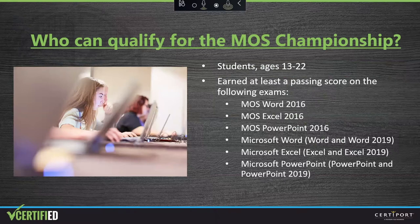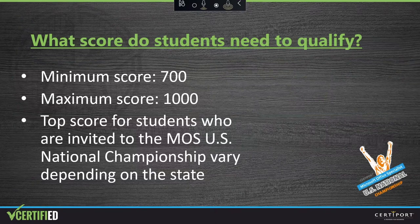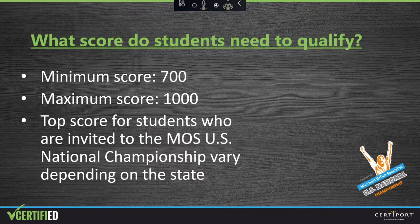The Microsoft Office Specialist Championship is for students between the ages of 13 and 22 as of June 15, 2021. Students can qualify for the championship by earning at least a passing score in Microsoft Word, Excel, or PowerPoint in Office 2016 or Office 365/2019. A passing score is between 700 and 1,000. The top scores for students invited to the U.S. National Championship varies depending on the state — in some cases, students are scoring very close to a perfect score.